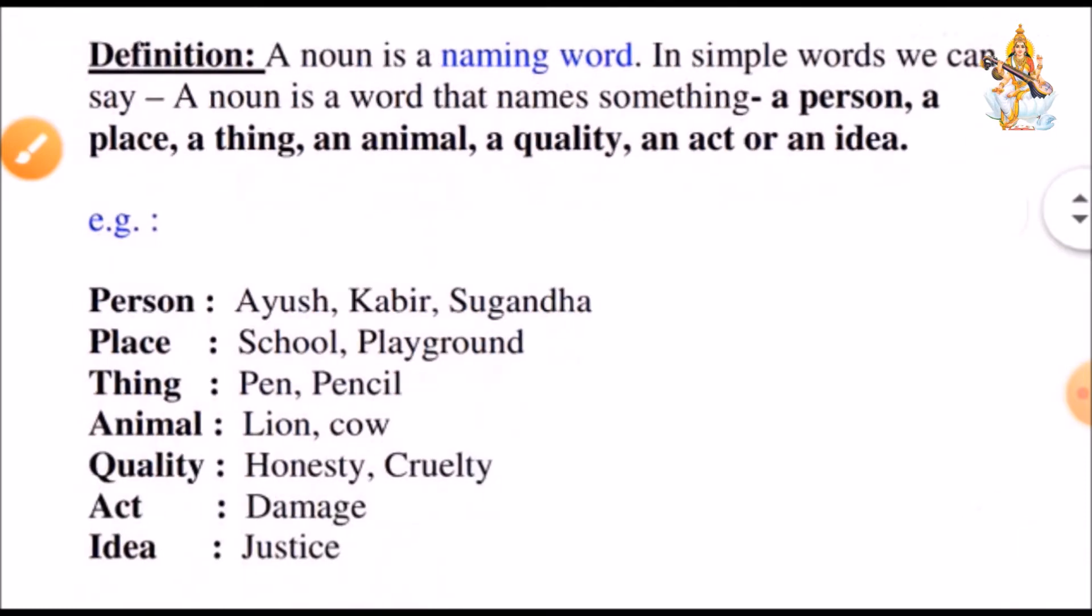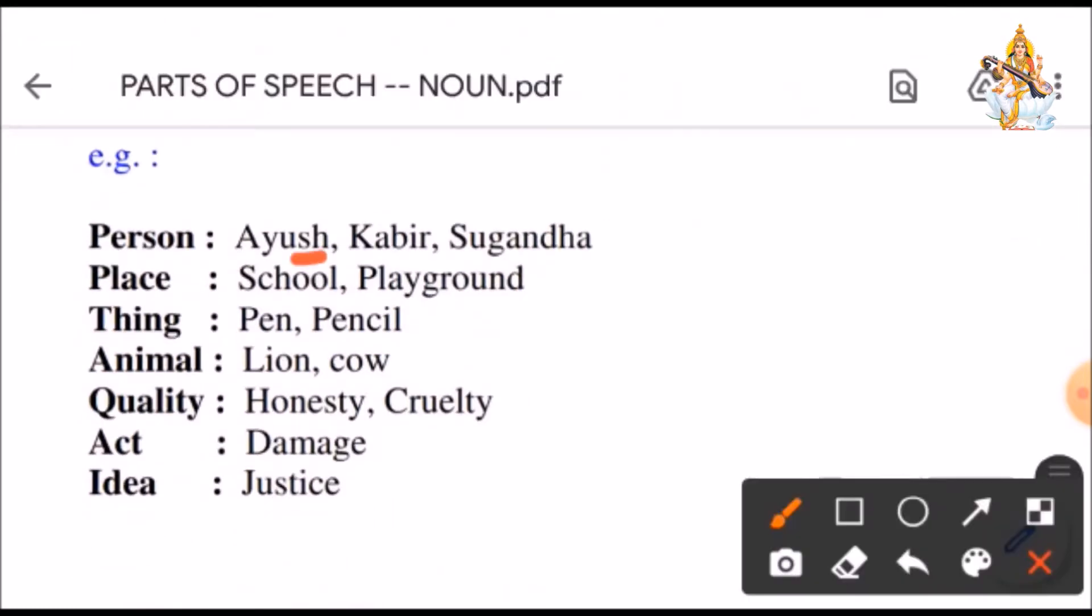See the examples of noun. Ayush, Kabir, Suganda, these are persons. School, playground, these are places. Pen, pencil, table, chair, etc., these are things. Lion, cow, these are animals.